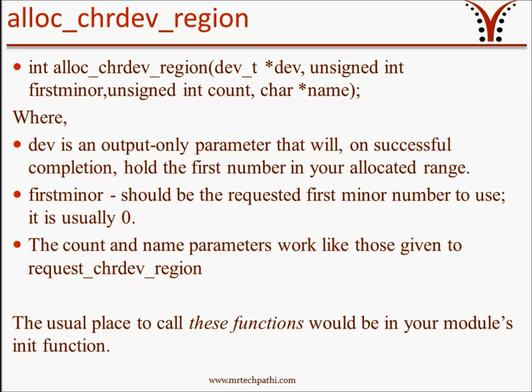alloc_chrdev_region takes four arguments and returns an integer. The first argument is 'dev', of type dev_t structure. 'Dev' is an output parameter that will, on successful completion, hold the first number in your allocated range. The second argument is 'first_minor' — the first requested minor number to use, usually 0. The third argument is 'count', the total number of contiguous device numbers you are requesting. The fourth argument is a character pointer 'name', the name of the device associated with this number range, appearing in /proc/devices and sysfs. The count and name arguments work like those in register_chrdev_region.